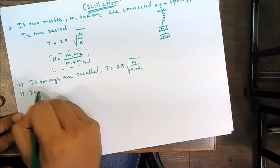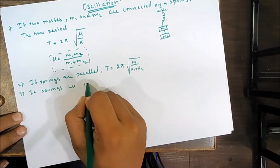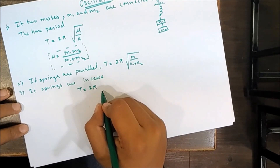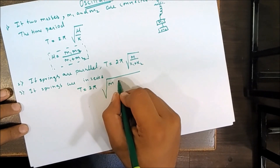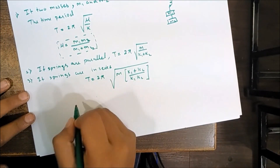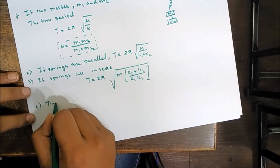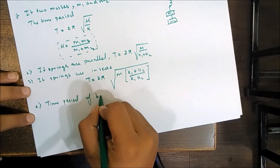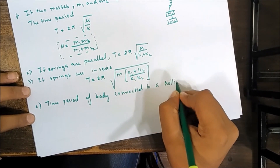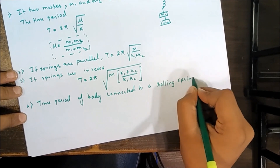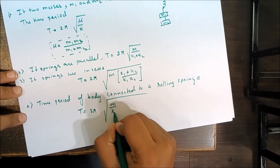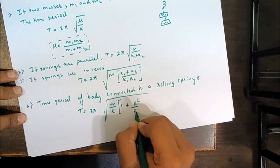If springs are in series, the time period is T = 2π√(M(k₁+k₂)/(k₁k₂)). The time period of a body connected to a rolling spring is T = 2π√((M/k)·(1 + k²/R²)).